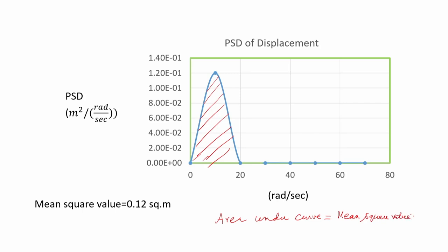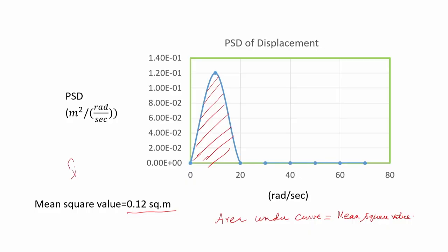The area under the curve is calculated using numerical techniques — trapezoidal rule or Simpson's rule — and gives a value of approximately 0.12 square meters. The square root of this quantity gives the RMS value. If the mean square value of velocity is wanted, multiply by omega²; for acceleration, multiply by omega⁴.